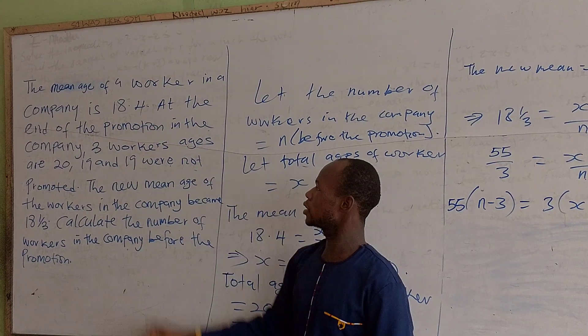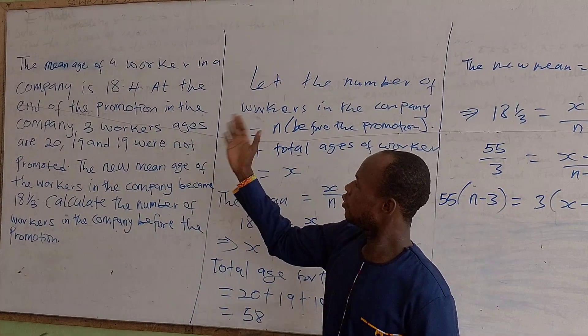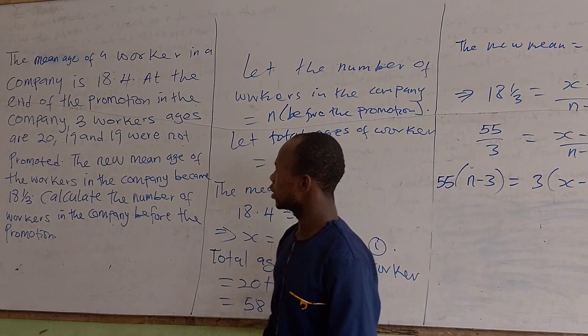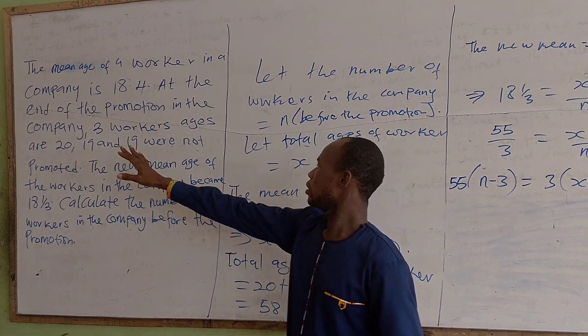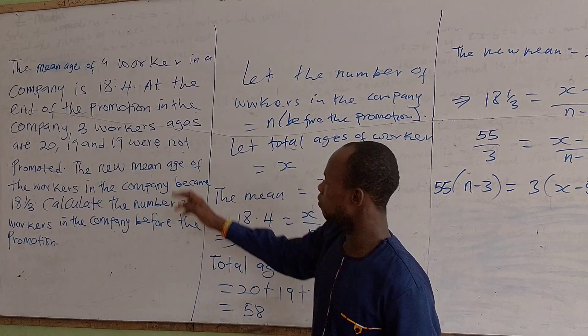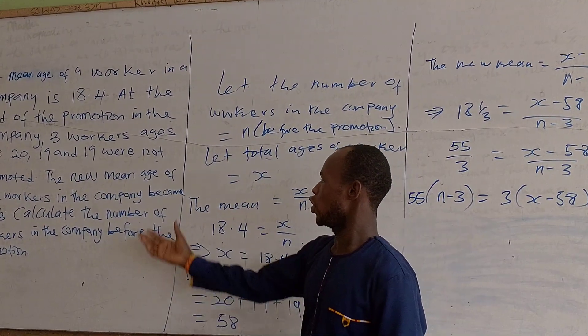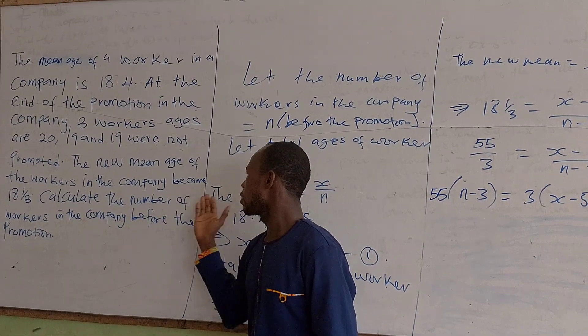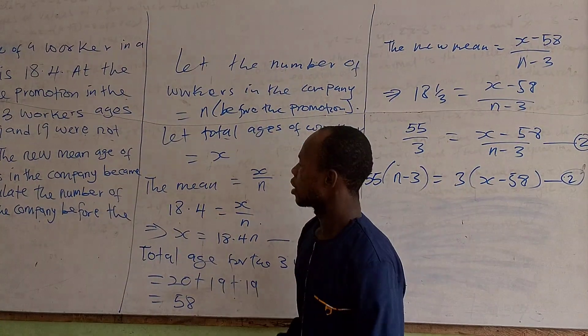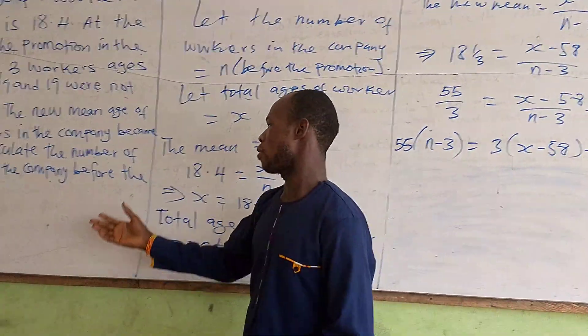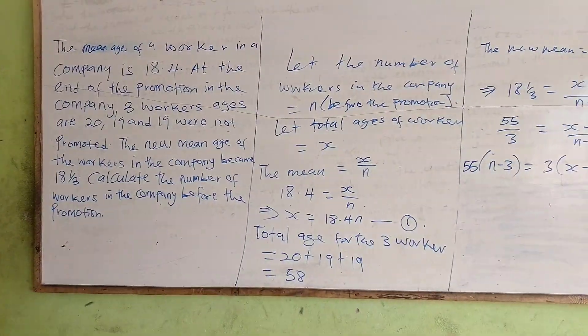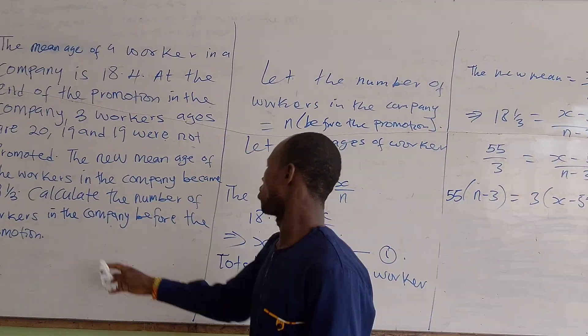The workers in the company is this: at the end of the promotion in the company, three workers ages 20, 19, and 19 were not promoted. The new mean age of the workers in the company became 18 and 1/3. Calculate the number of workers in the company before the promotion.